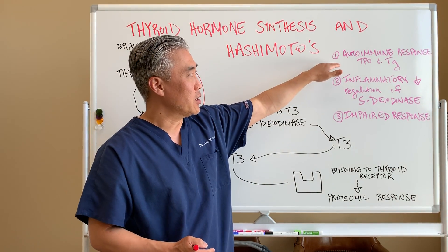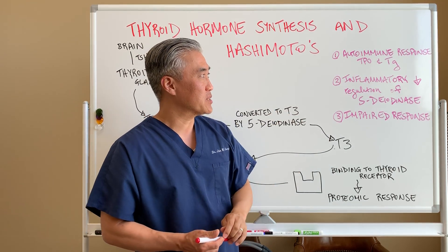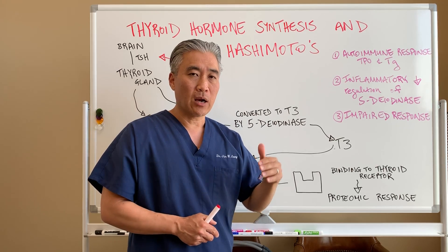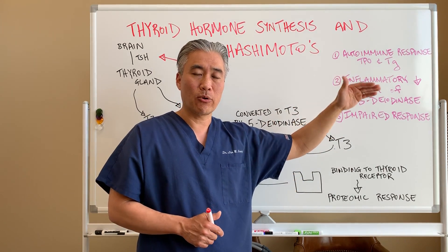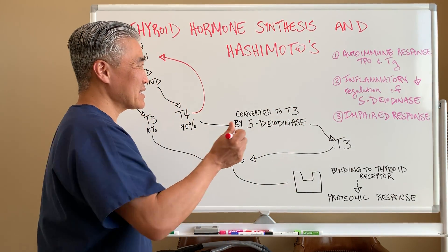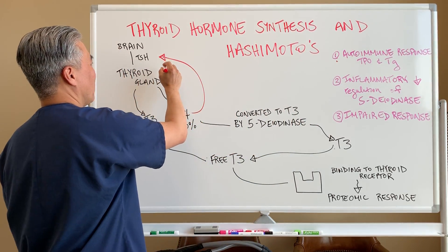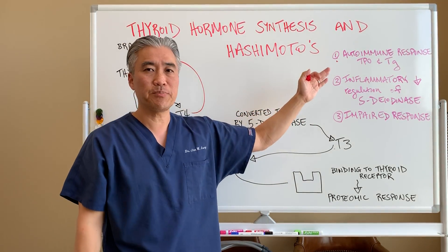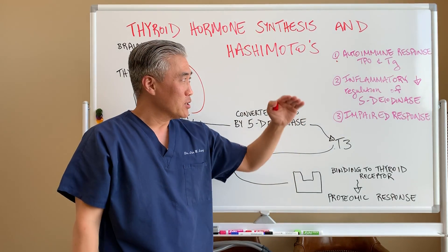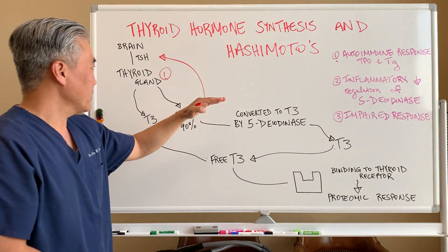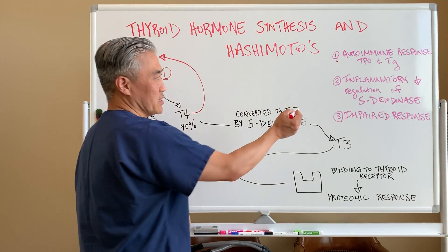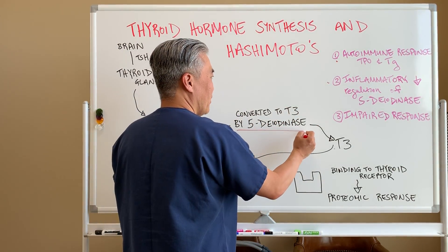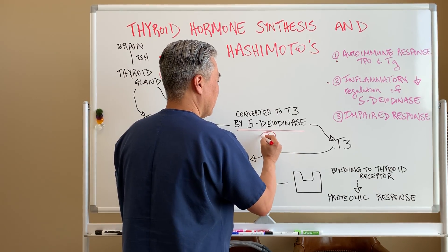Number one is an autoimmune response to TPO and TG antibodies — thyroid peroxidase and thyroid globulin. This will directly impact the thyroid gland itself; it's an immune response to the thyroid gland. Then your second issue is an inflammatory response that will impact this enzyme.